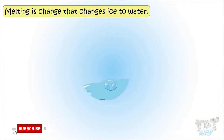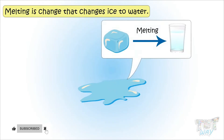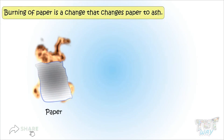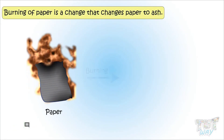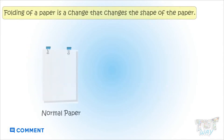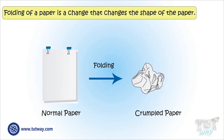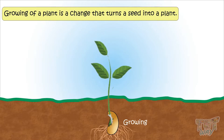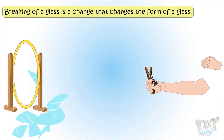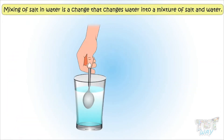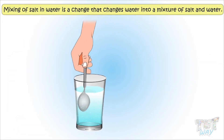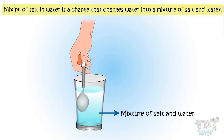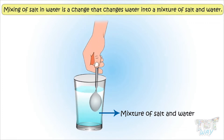Melting of ice is a change that turned ice into water. Burning of paper is a change that turned paper into ash. Folding of paper is a change that changed the shape of a paper. Growing a plant from a seed is a change that turned seed into a plant. Breaking of glass is a change that changed the form of a glass. Mixing of salt and water is a change that changed water into a mixture of salt and water. So all these are changes.